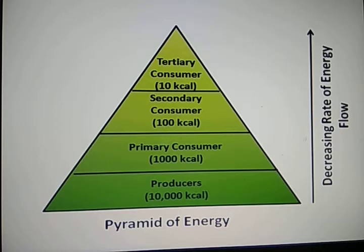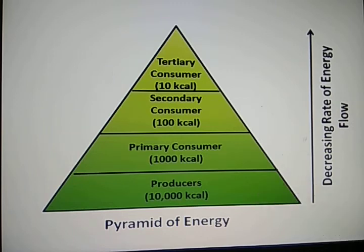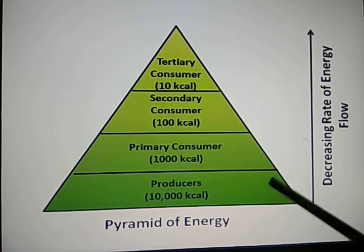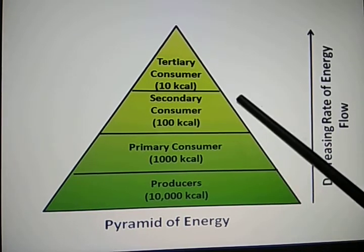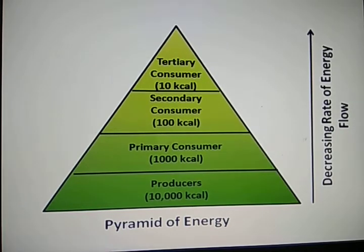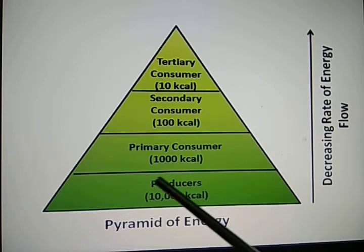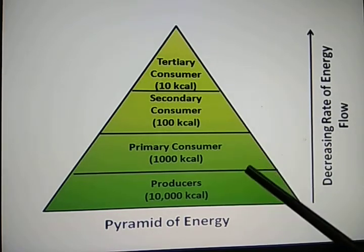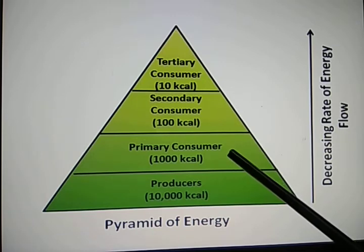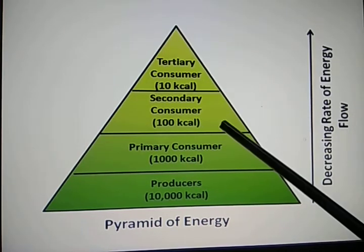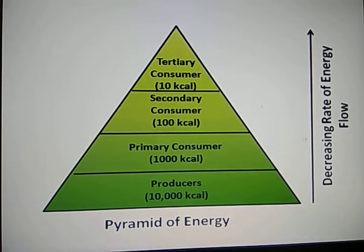The pyramid of energy shows how energy transfers from one trophic level to another. Producer is trophic level 1, primary consumer is trophic level 2, secondary consumer is trophic level 3, and tertiary consumer is trophic level 4. For example, if 10,000 kilocalories of energy is produced by the producer, only 10% is conserved at each level — so 1,000 kilocalories is taken by the primary consumer, then 100 kilocalories by the secondary consumer, and finally 10 kilocalories by the tertiary consumer. This is known as the 10% law of nature.